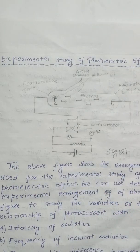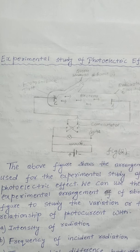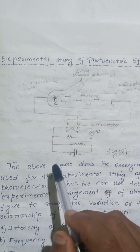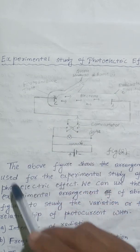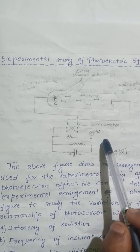The plate A can be maintained at a desired positive or negative potential with respect to emitter C. When the collector plate A is positive with respect to the emitter plate C, the electrons are attracted towards plate A, and the emission of electrons causes the flow of electric current in the circuit. The potential difference between the emitter and collector plates is measured by a voltmeter.